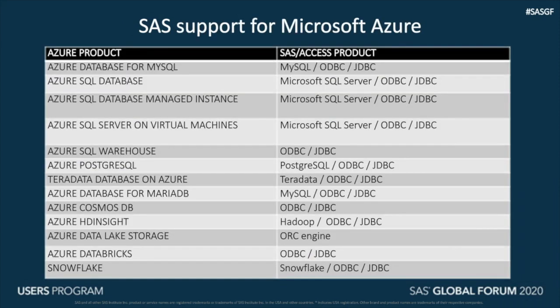Here's a summary of all the possible databases in Azure that can be accessed from SAS using the various SAS Access Interfaces. If you have Teradata database in Azure, you can leverage SAS Access Interface to Teradata. If you have Snowflake in Azure, you can leverage the new SAS Access Interface to Snowflake. SAS Access Interface to ODBC and JDBC can be used to connect and access data from virtually almost all resources.